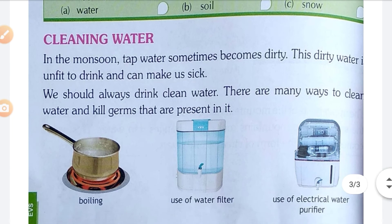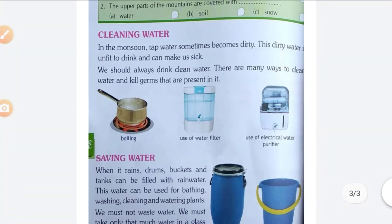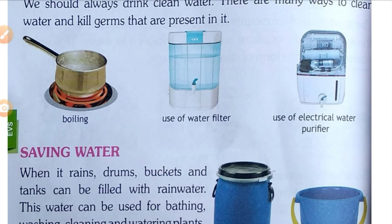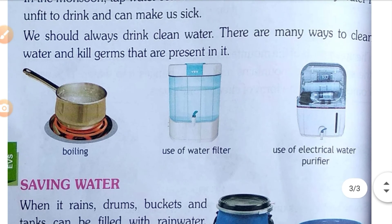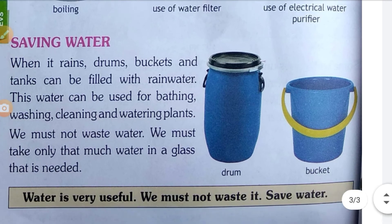Cleaning water: In the monsoon, tap water sometimes becomes dirty. This dirty water is unfit to drink and can make us sick. We should always drink clean water. There are many ways to clean water and kill germs that are present in it: boiling, use of a water filter, and use of an electric water purifier.